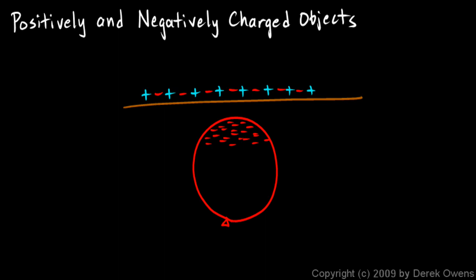But here's what happens. Remember we said that the protons are stuck. They're fixed in the nucleus. They don't move around. They're fastened, or they're built into the nucleus of the atom.